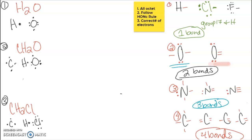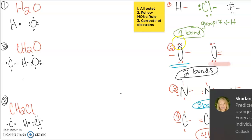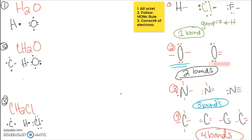We're going to be doing a couple of different Lewis dot structure drawings for different molecules. The first thing we're going to look at is the HONK rule. Remembering that if it is a hydrogen or halogen, it's going to have one bond. Each of these have one electron to share to get to octet — or in hydrogen's case, two valence electrons in its outer shell.